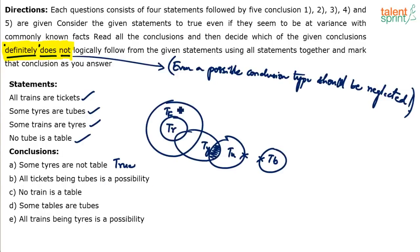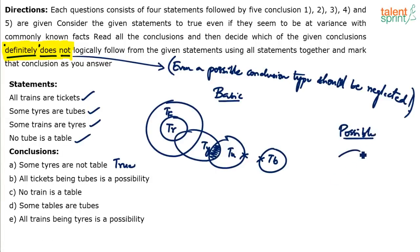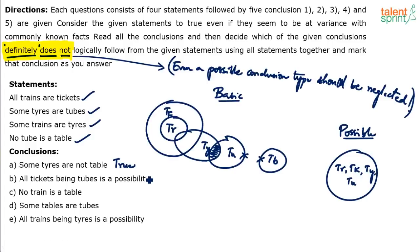Second conclusion: all tickets being tubes is a possibility. Yes, it is possible. I can draw a possible diagram where all trains are tickets shown with the same circle, some trains are tires, and some tires are tubes — meaning all trains, tickets, tires, and tubes can be represented by the same circle. In that case, all tickets being tubes is possible. So this conclusion is also true — it is possible.